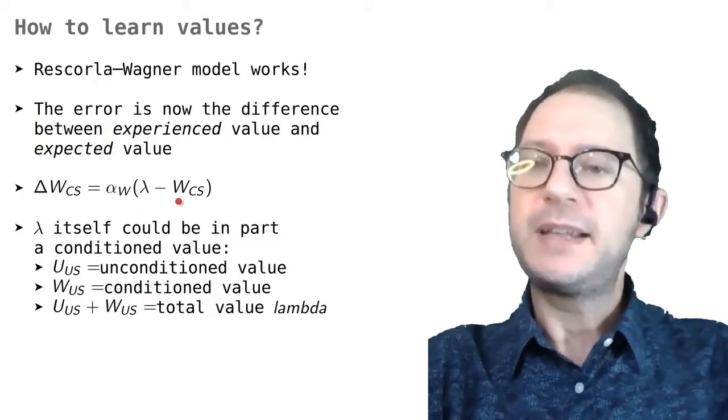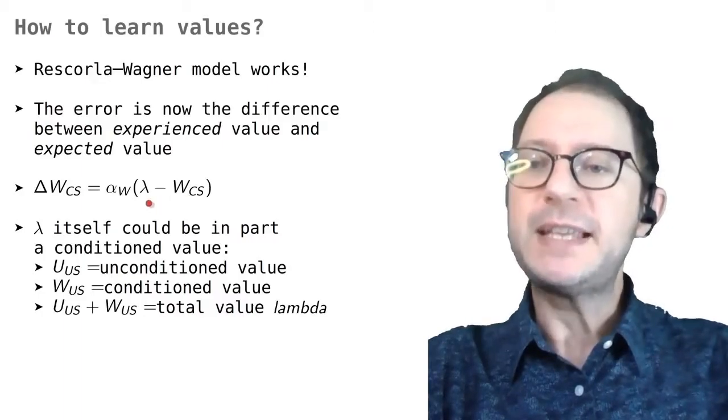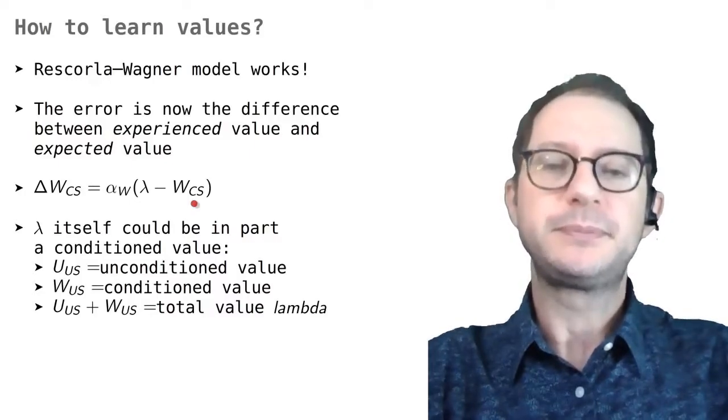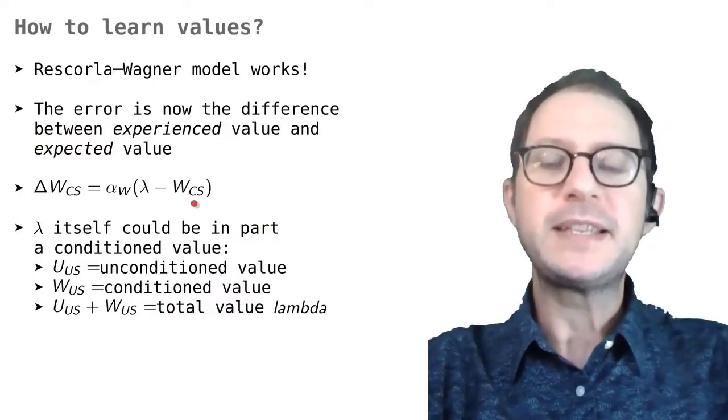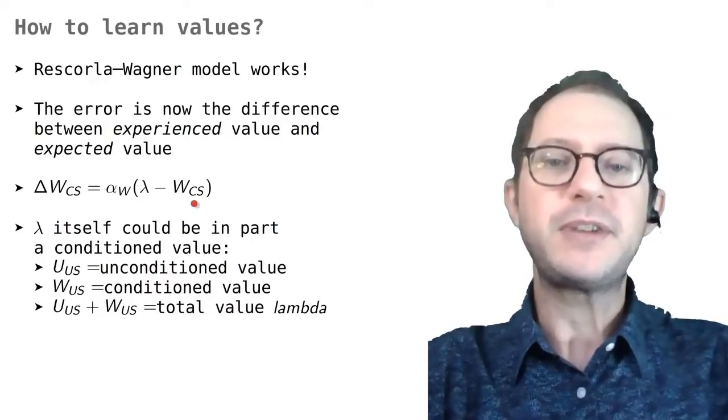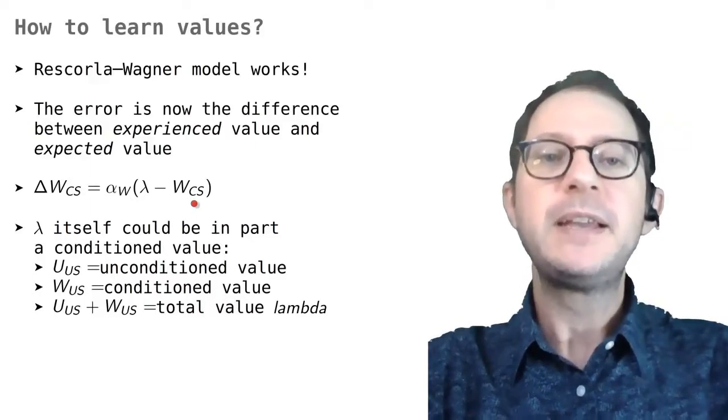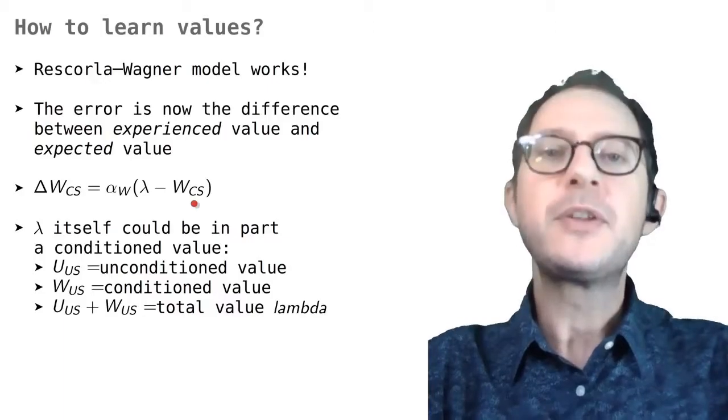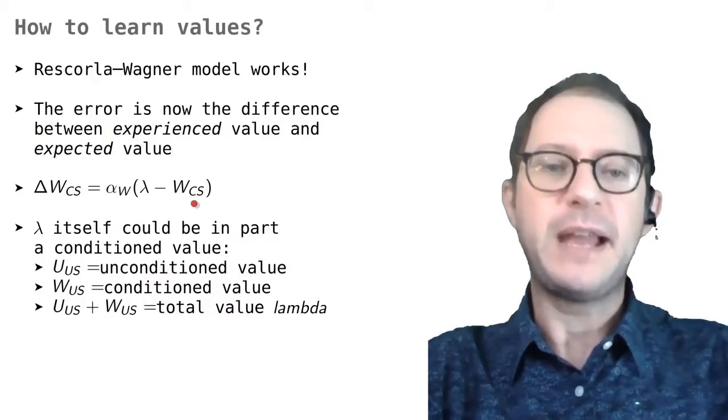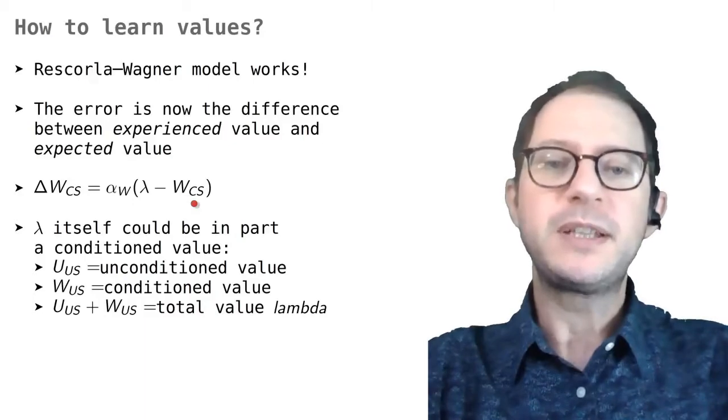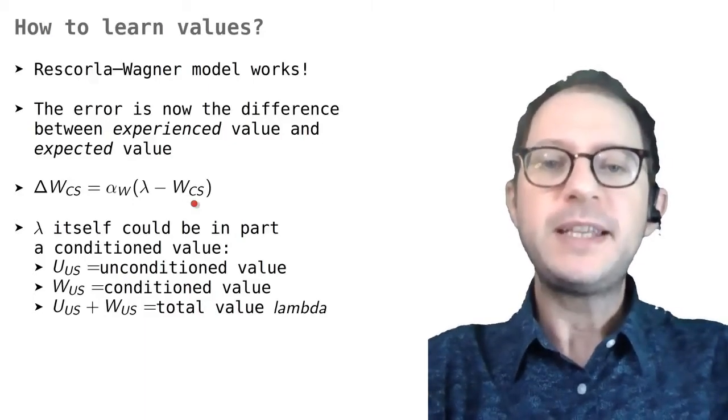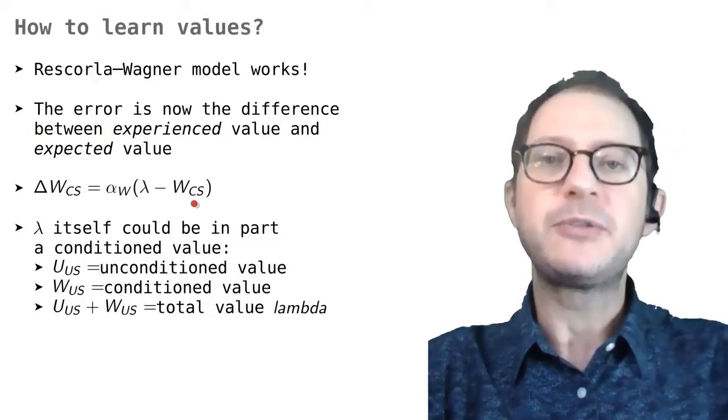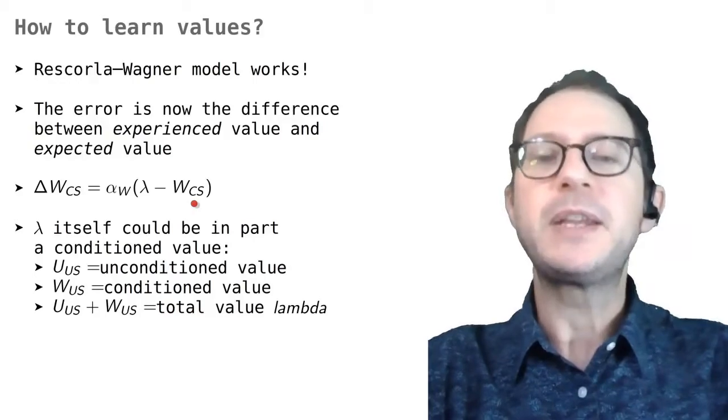If lambda is the value of the US and WCS is the value of the CS, this is the difference, which as you see looks exactly like our usual error. So, our equation for the change in value of the CS is the same as the equation for the change of associative strength in the Rescorla-Wagner model. This is why I said earlier that associative strength and value actually refer to the same thing. The reason why I'm calling it value now is because I think it gives a better idea of what learning is trying to accomplish. That is, learning is about figuring out the value of things, either the value of actions in instrumental conditioning or the value of stimuli in Pavlovian conditioning.